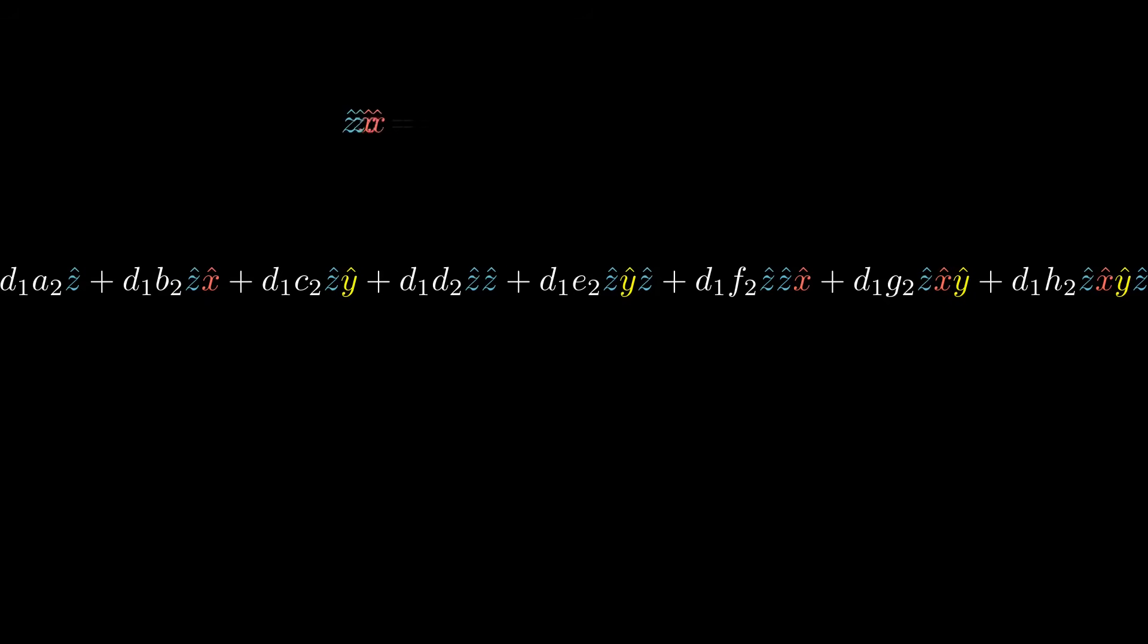Wherever you find two basis vectors multiplied together, you can swap them at the cost of a negative sign. And wherever you find a basis vector multiplied by itself, the result would be one.